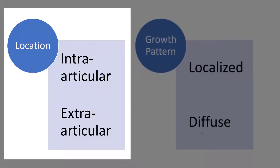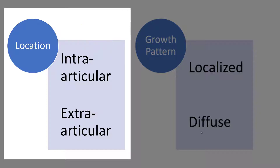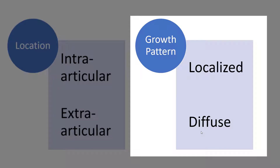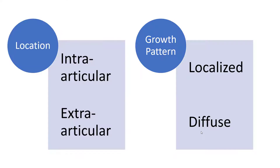Location is intraarticular and extraarticular, and PVNS is the classic intraarticular tenosynovial giant cell tumor. You can also divide them based on growth pattern as localized and diffuse. Most of the lesions in the fingers are localized, while those in enlarged joints are diffuse.